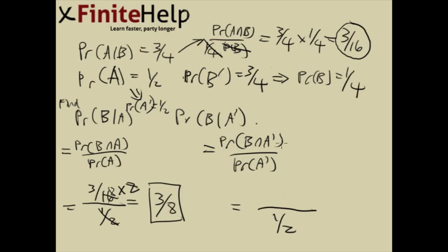Quickly fill in one-half here. B intersect A'. That's not given yet, and we actually still haven't figured that out yet. And I'm going to use the Venn diagram to explain what this is actually going to be.